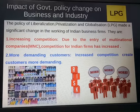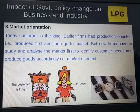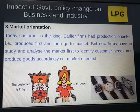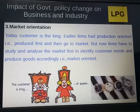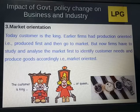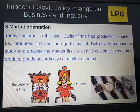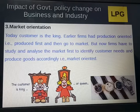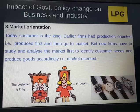The third impact is market orientation. Today, the customer is the king. Earlier, firms had a production orientation — they produced first and then went to the market. But now, firms have to study and analyze the market first, identify customer needs, and produce goods accordingly. In other words, there is a shift from production-oriented to market-oriented operations in this fast-changing world.